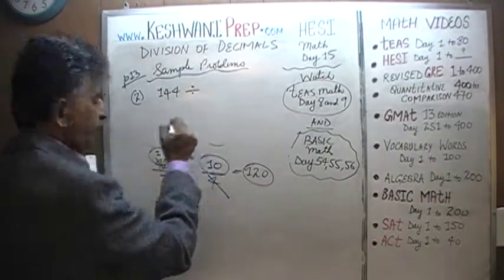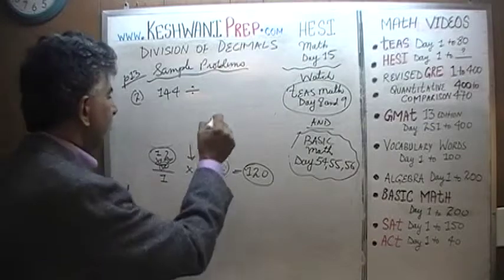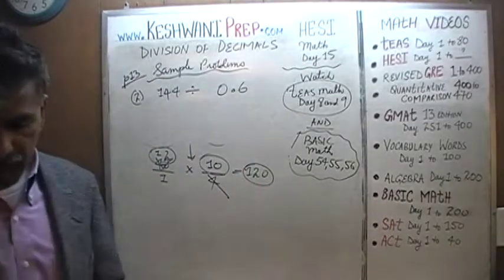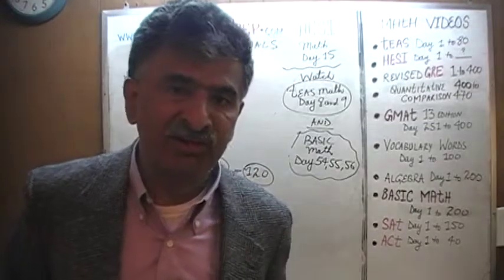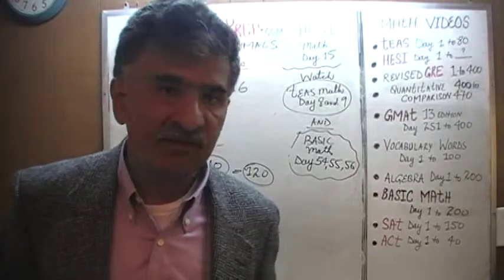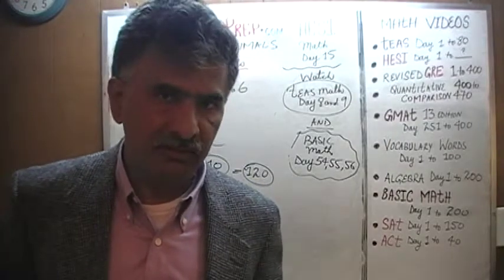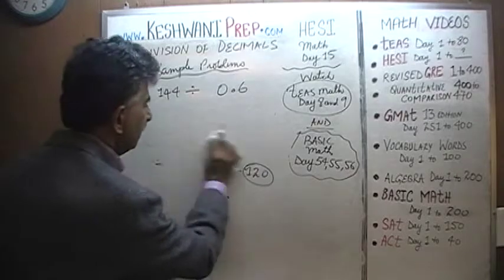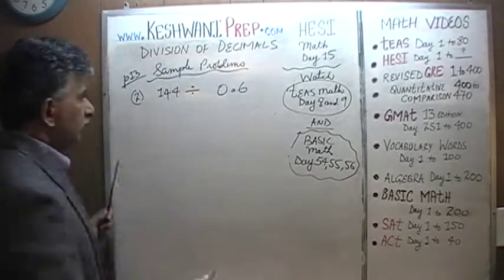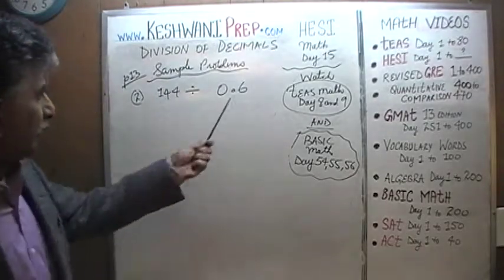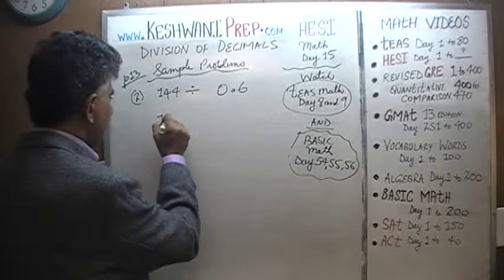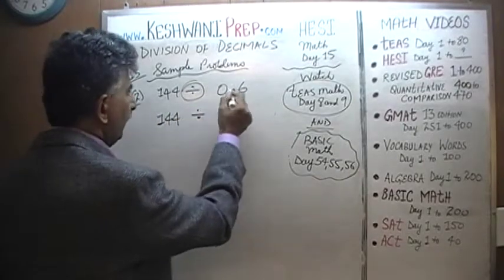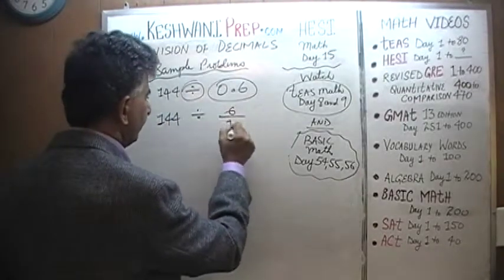Number 2: 144 divided by 0.6 — the same exact concept, the same method, nothing changes. So we have 144 over 1 divided by 0.6, which can be written as 6 over 10.